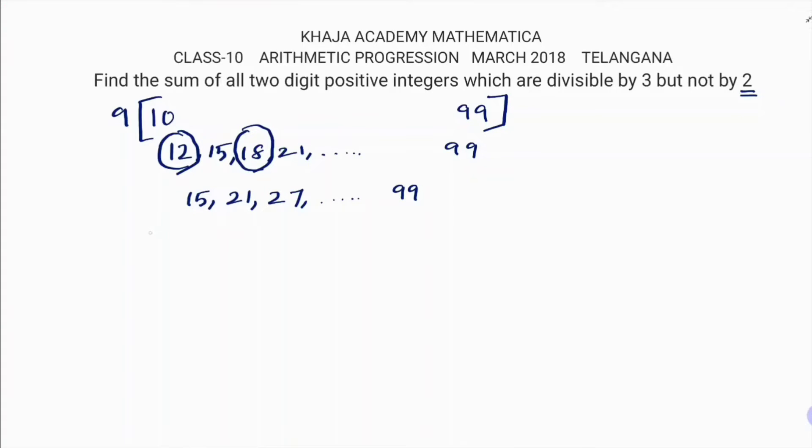Now in this, the first term is 15 and common difference is a₂ minus a₁, which is 21 minus 15, which is nothing but 6.